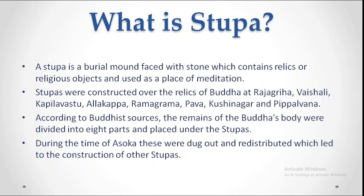Construction of Stupas began during Ashoka's time. Ashoka held the third Buddhist council and gave a lot of support to Buddhism. The construction of Stupas was made to house the Buddha's relics. There were originally eight sites where the relics were distributed and Stupas were built — Rajgriha, Vaishali, Kapilavastu, Allahabad, Ramagram, Mawa, Kushinagar, and Pippalhawa.